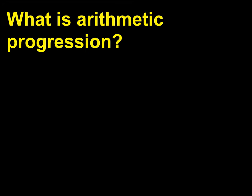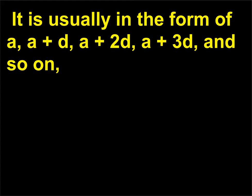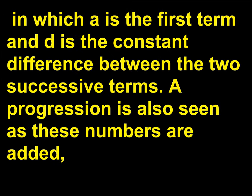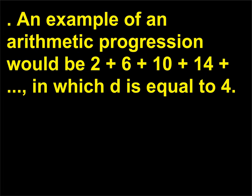What is arithmetic progression? Arithmetic progression is one of the more simple types of series in mathematics. It is usually in the form of a, a+d, a+2d, a+3d, and so on, in which a is the first term and d is the constant difference between two successive terms. A progression is also seen as these numbers are added: a + (a+d) + (a+2d) + (a+3d) + ... + (a+(n-1)d). An example of an arithmetic progression would be 2 + 6 + 10 + 14 + ..., in which d is equal to 4.